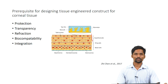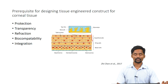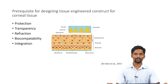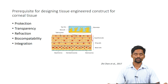The cornea is responsible for 80 percent of the refraction of the eye, hence refraction is another required property. As with any other tissues, the scaffold prepared for cornea should be biocompatible with the host tissue. And most importantly, integration — the tissue engineering construct prepared for cornea must integrate with the host tissue, thereby not allowing any type of microbial invasion.